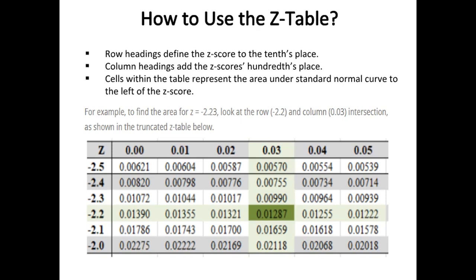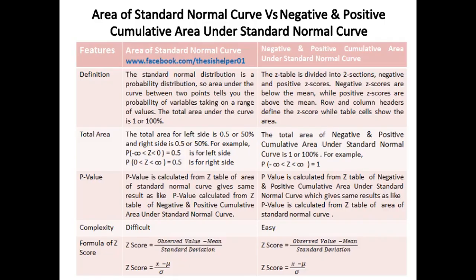The probability of values falling below this value in a normally distributed population is 0.01287 or 1.287%. This illustrates the comparison between the area of the standard normal curve and the negative and positive cumulative area under the standard normal curve.